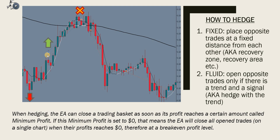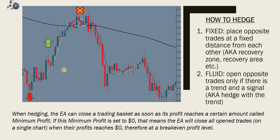You can also instruct it to place stop losses, but in this chart I instructed it to place a pending order of a higher lot size at a certain distance. When the price went up, the basket profit started decreasing until it reached zero, at which point the expert advisor closed both trades. So basically, I didn't lose money from the losing trade — I closed it at zero instead of at a negative balance. The expert advisor then resumed trading and opening sells.